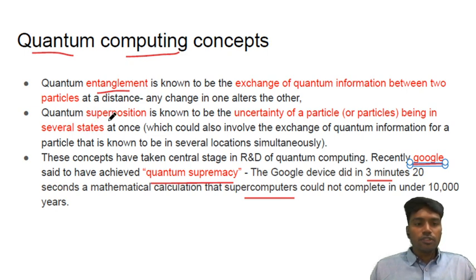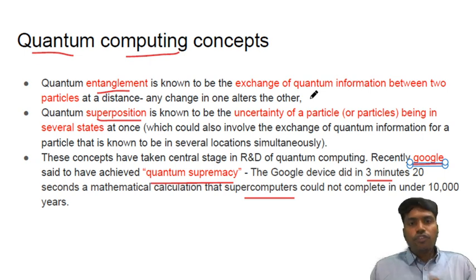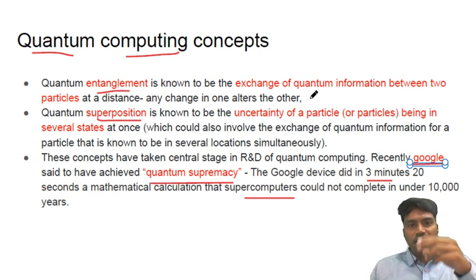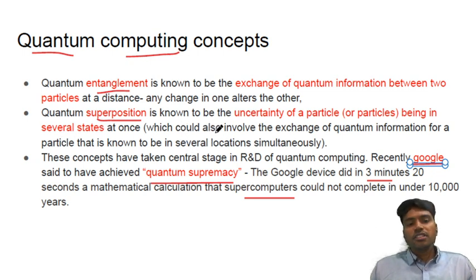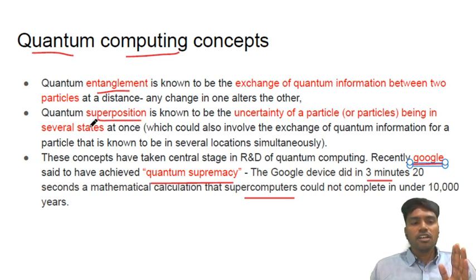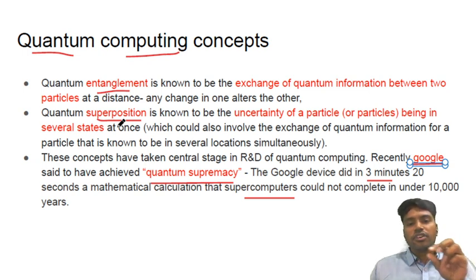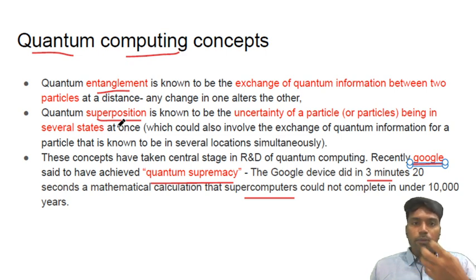The second concept is quantum superposition. If we take a coin in the starting position, we see only heads and tails. When you flip it, in the intermediate position, there is an overlapping position of heads and tails simultaneously — half heads, half tails. Similarly, in conventional computers, information is stored in ones or zeros. In quantum computing, apart from those two positions, there are intermediate positions. If information is stored in more than two positions, it can carry more and more information, meaning it takes less time to calculate. These concepts are used in quantum computing to achieve quantum supremacy.